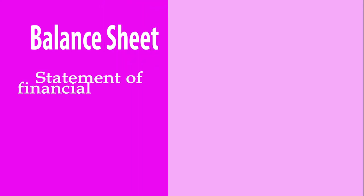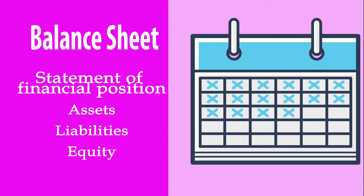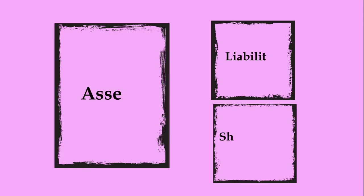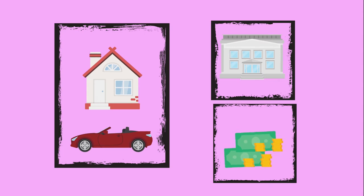The balance sheet shows a company's resources, which are its assets, and how those resources were funded, meaning in terms of liabilities and shareholders' equity, on a particular date, usually the end of the year. Think of the balance sheet like a point estimate or a snapshot of a point in time. There is this famous accounting equation: assets equal liabilities plus shareholders' equity. Because each side needs to balance — hence the name of the balance sheet — this is why we use double entry accounting when developing a balance sheet.